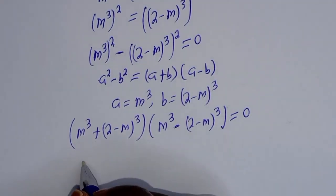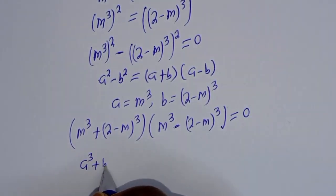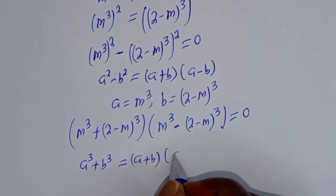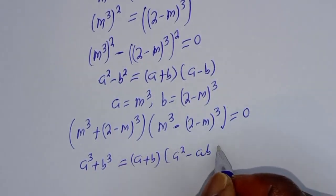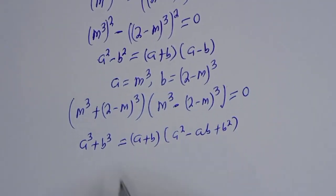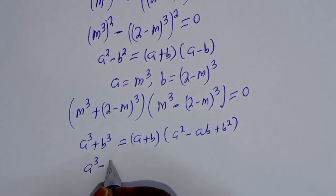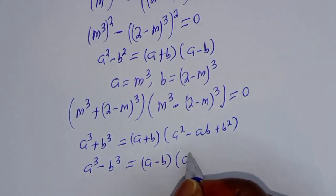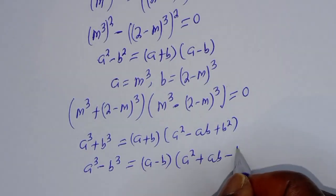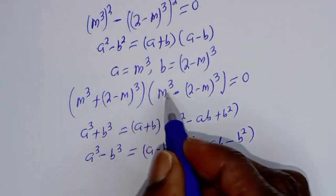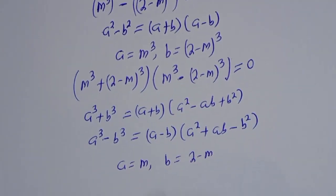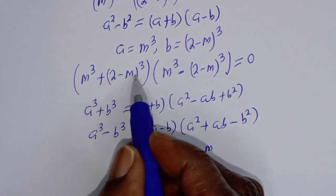Take note that if you have a cubed plus b cubed, this equals a plus b times a squared minus ab plus b squared. And a cubed minus b cubed equals a minus b times a squared plus ab plus b squared. From here, a is equal to m and b is equal to 2 minus m. We can substitute.